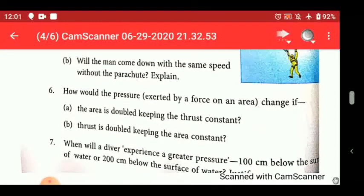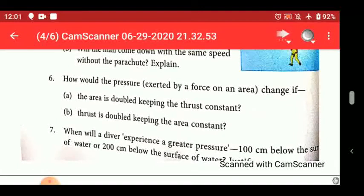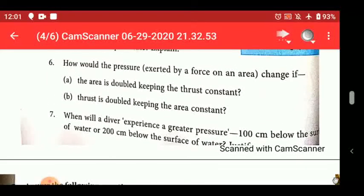So how would the pressure exerted by a force on an area change? Look carefully, P is equal to F upon A. If you double A, it becomes P equals F upon 2A. So if you look at P, it became half - half of F upon A, right? But if you double the thrust, thrust is doubling on top, 2F upon A is happening, that means the entire pressure will double. So understand this carefully, and if not understood, please tell me. When will a diver experience a greater pressure? At 100 cm or 200 cm below the water? So the deeper it is, the more pressure will be applied on it. So the deepest is at 200 cm, so diver will experience a greater pressure at that depth.